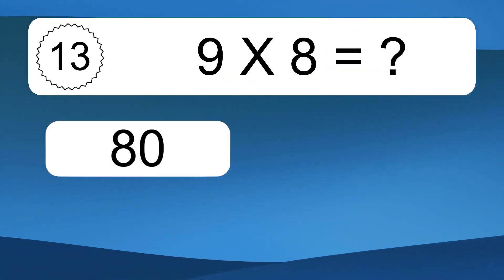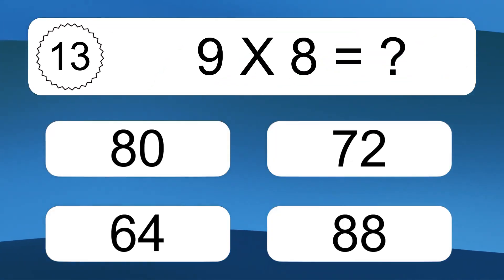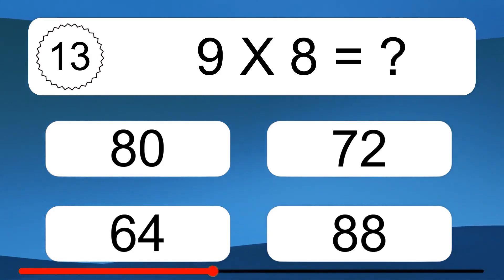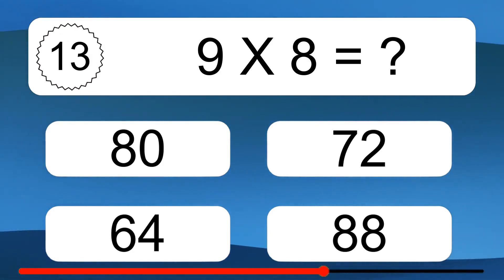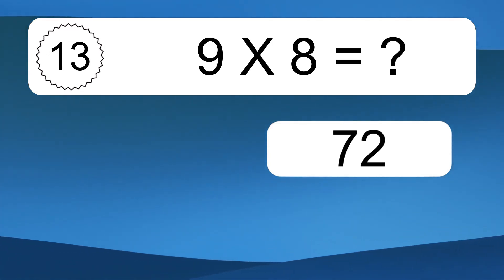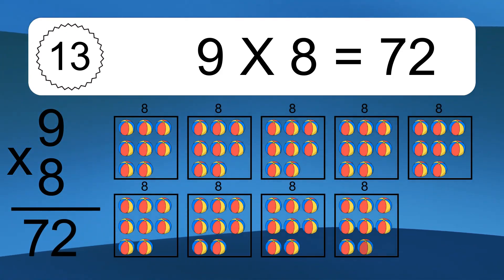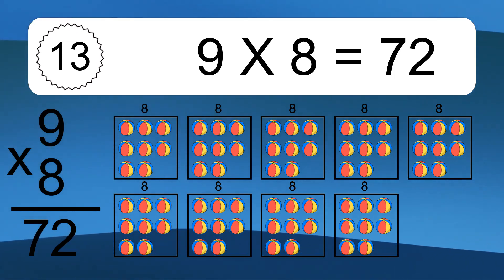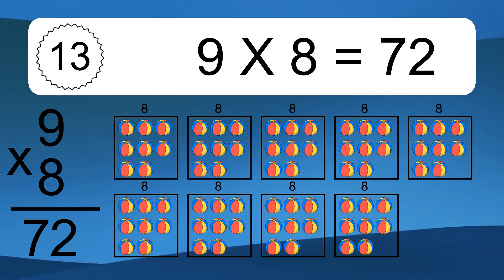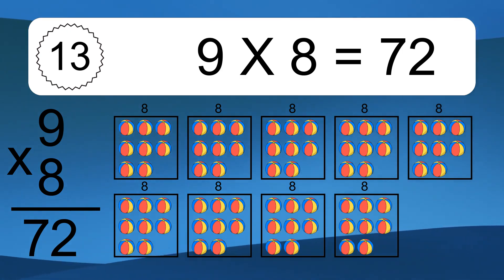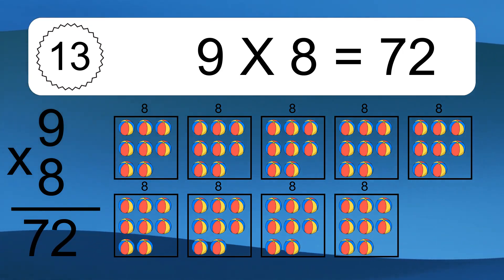9 times 8 equals what? 9 times 8 equals 72. We have 9 boxes and each box has 8 colorful balls inside. If you count all the balls in all the boxes together, you will have 9 times 8 balls. This equals 72 balls.